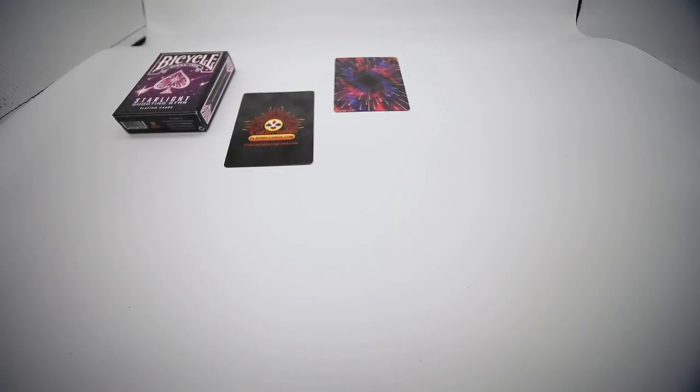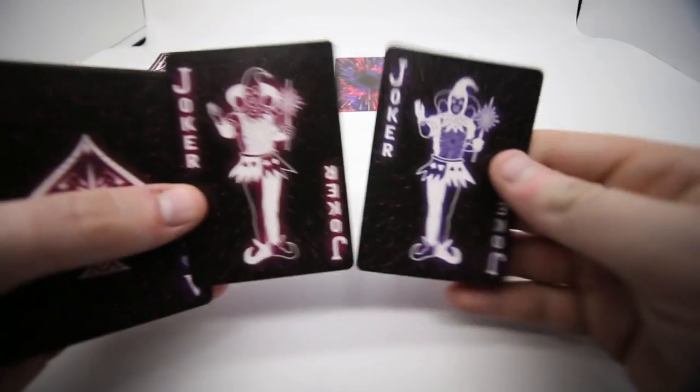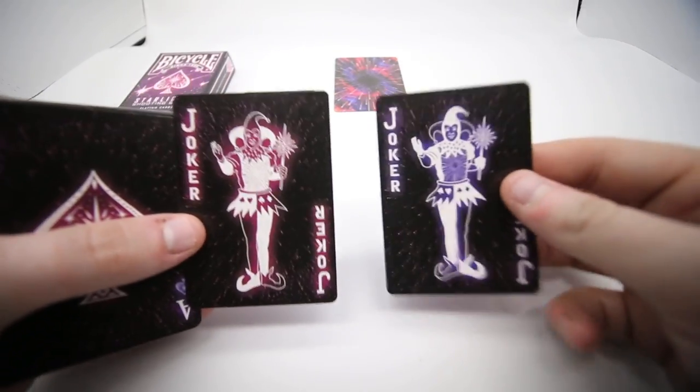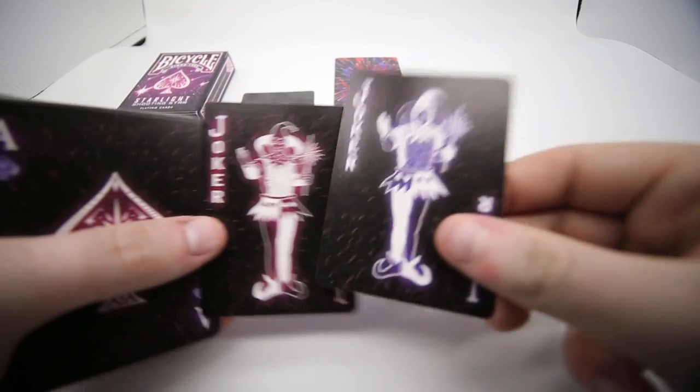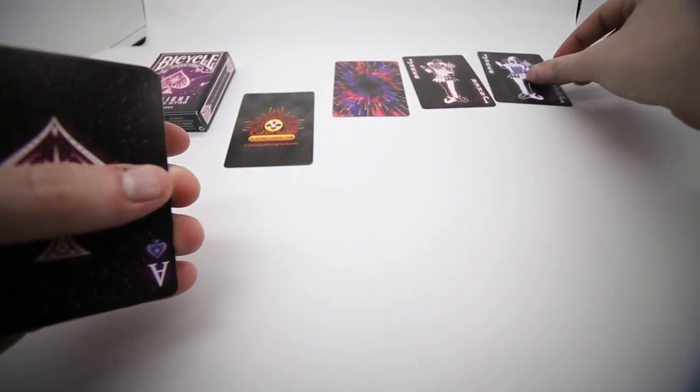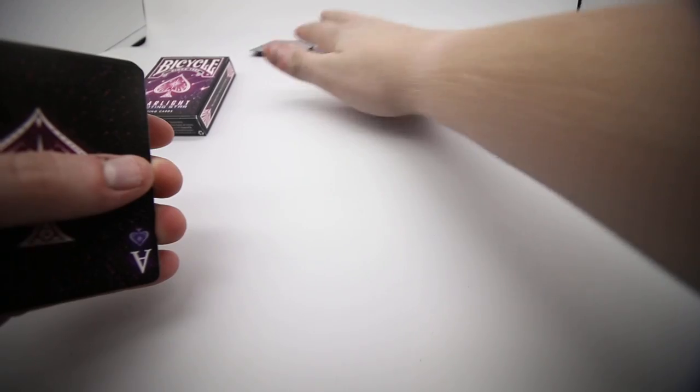Now the two jokers you get here: one in red, one in blue. Same effects as the other Starlight deck where they look neon, which is really cool. I love those, they're really nice. Let's put those out of the way.